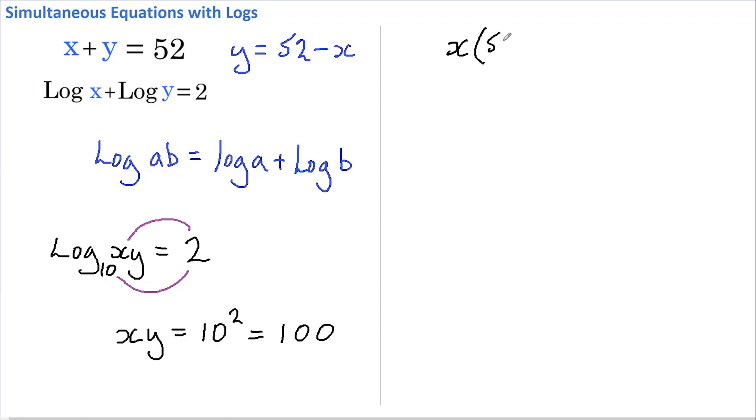And if we substitute this into this equation here, we get X times Y, Y is 52 less X, equals 100.